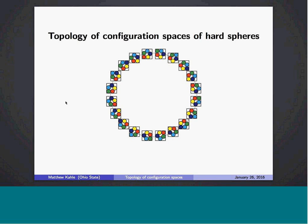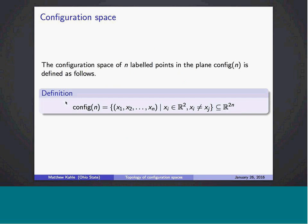We're interested in two-dimensional configuration spaces, but I've found sometimes if I talk about hard disks, people think I mean hard disks for a computer — memory and storage — and that's not what I mean at all. We'll talk about these configuration spaces, and I want to start at the beginning by talking about the configuration space of points, which is well-known and well-loved by algebraic topologists, and shows up in many other areas of mathematics.